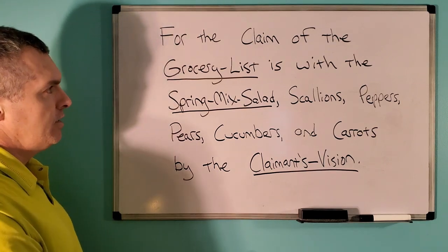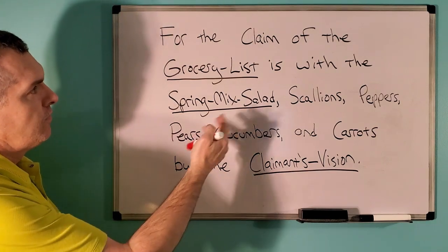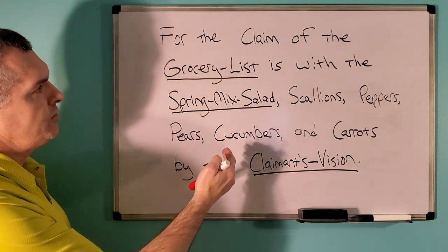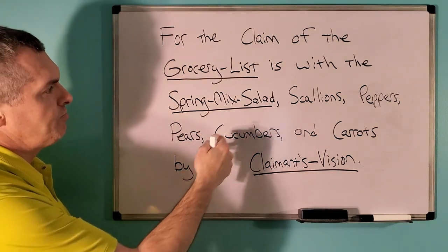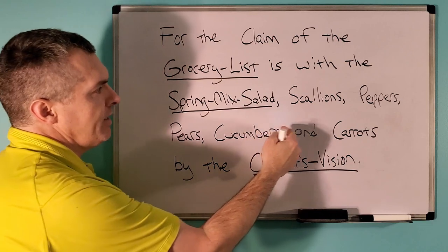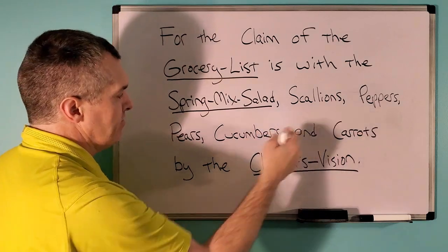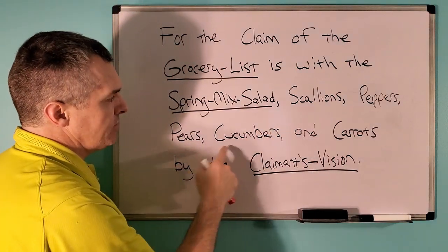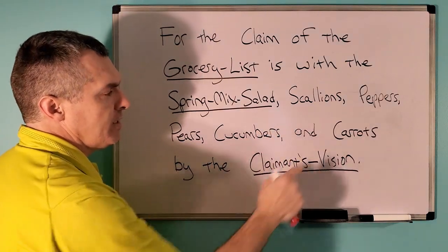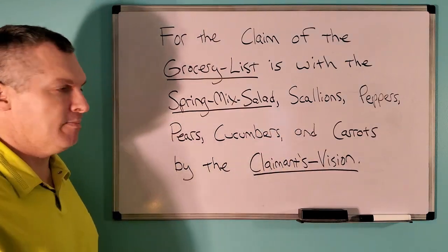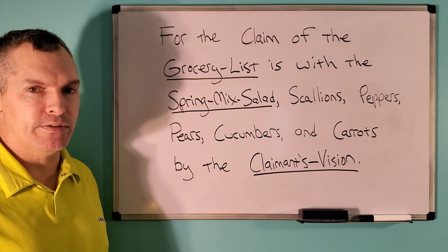Conversely, you could say: for the claim of the grocery list is with the spring mix salad, and scallions, and peppers, and pears, and cucumbers, and carrots, by the claimant's vision.